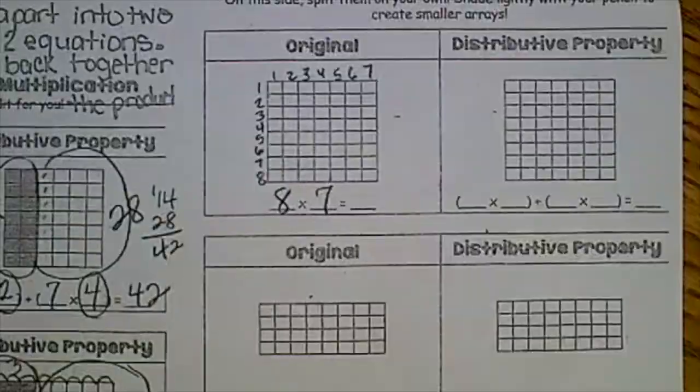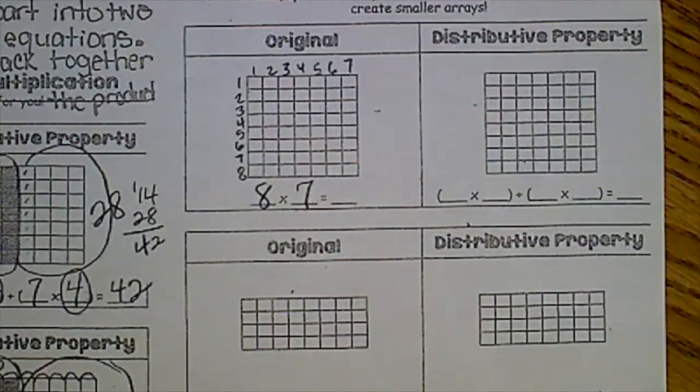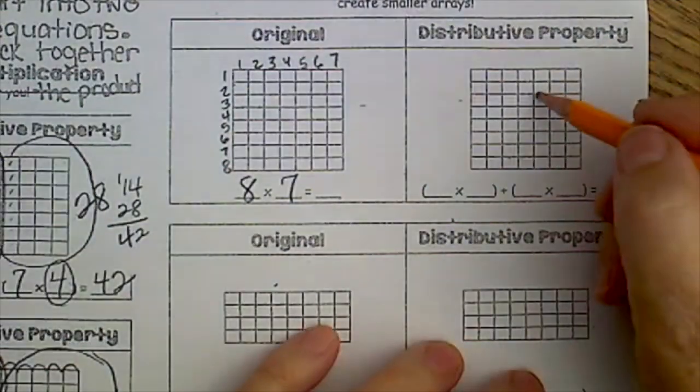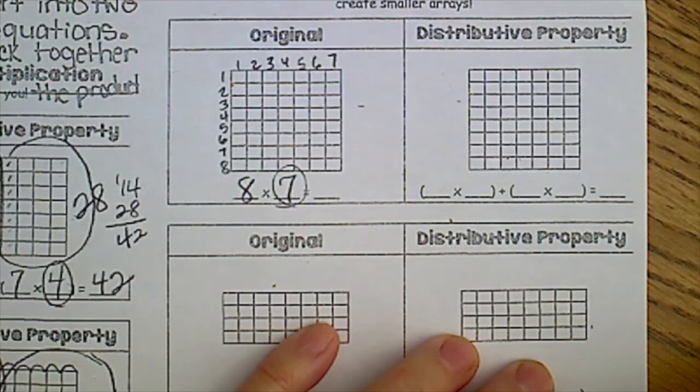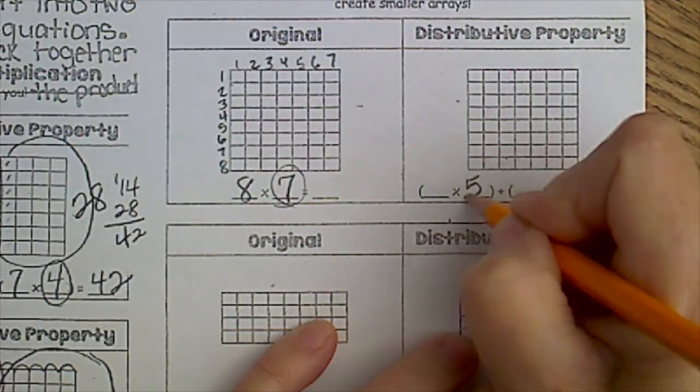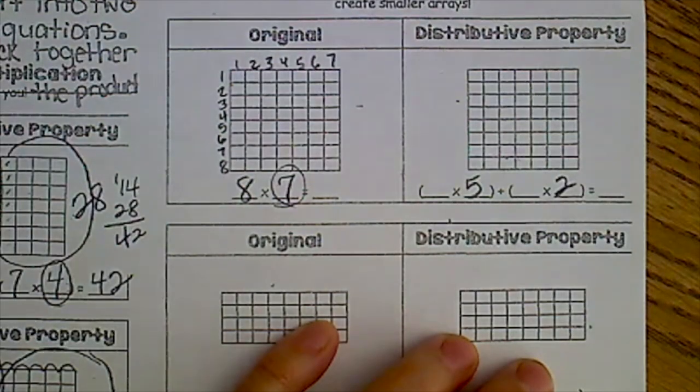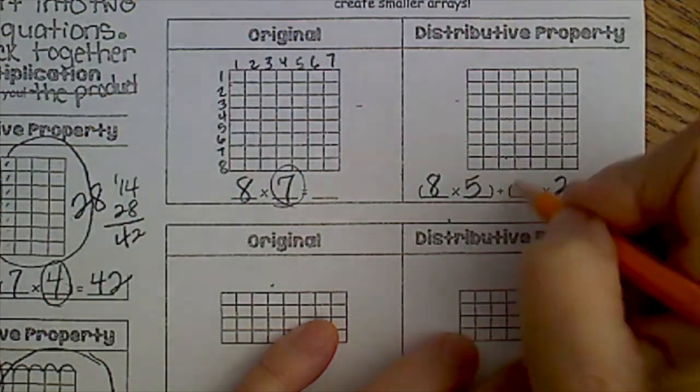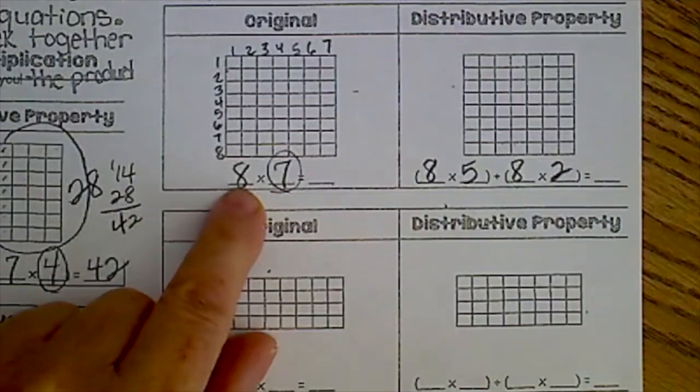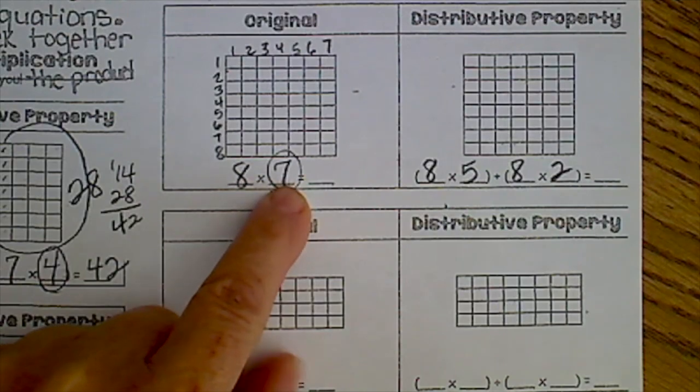So over here I want you to break eight times seven into two separate problems. Now I've told you all along I like friendly numbers. Five plus two is seven, so I'm going to put five and two there. Eight goes at the beginning because we're multiplying that eight times two numbers that add up to seven.